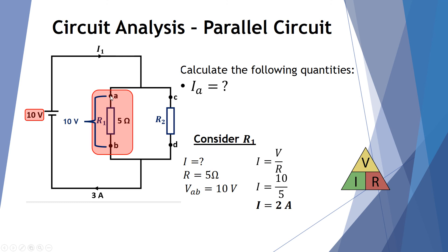Now we want to work out the current at point A — which is the same as the current at point B, the current running through the 5-ohm resistor. Using Ohm's Law, V equals IR, and considering only resistor 1: the current is the unknown, resistance is 5 ohms, and the voltage between A and B is 10 volts. Using I equals V over R, the current through the first branch is 10 volts divided by 5 ohms, which gives 2 amps.